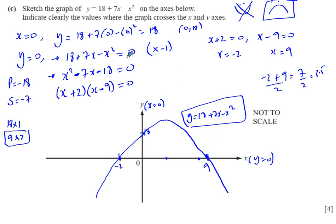So I'm solving this equation and manipulate it by multiplying by minus 1 both sides just to make my factorizing easier. That's perfectly fine. So just make sure, indicate clearly the values where the graph crosses the x and y axis. So we've done that. If you want to be extra careful, you can put those coordinates: 9, 0; minus 2, 0; and 0, 18. And there we have our sketch of the graph.